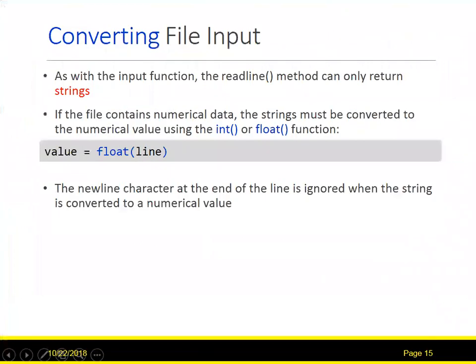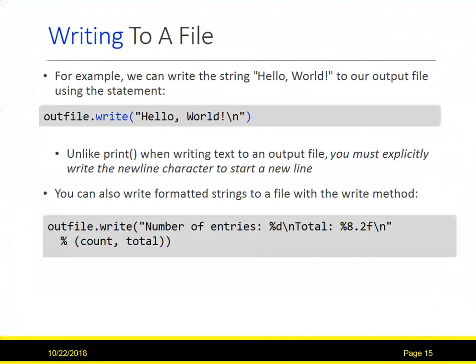As for strings and the input function: the readline method can only return strings. If we want to convert to something else, we have to use float or whatever. In this case they're converting to float. The newline character at the end of the line is ignored when the string is converted to a numeric value, which is handy.